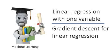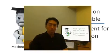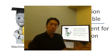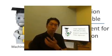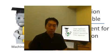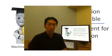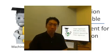In previous videos, we talked about the gradient descent algorithm, and we talked about the linear regression model and the squared error cost function. In this video, we're going to put together gradient descent with our cost function, and that will give us an algorithm for linear regression — fitting a straight line to our data.